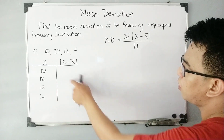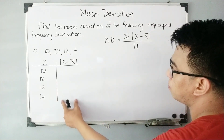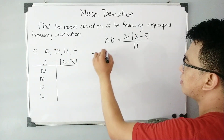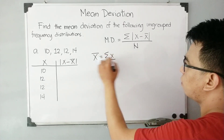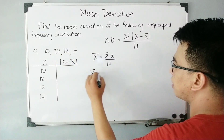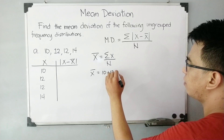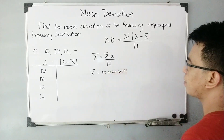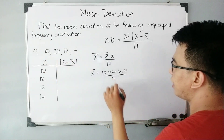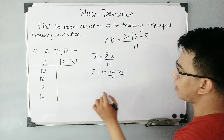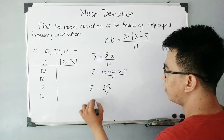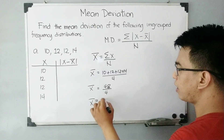To complete the second column, we need to find first the mean of this given data set. The formula is simply the summation of x over n. So x-bar is equal to 10 plus 12 plus 12 plus 14, over the number of scores, which is 4. Adding these numbers gives us 48 over 4. Simplifying, 48 divided by 4 is equal to 12. Therefore, the mean is equal to 12.